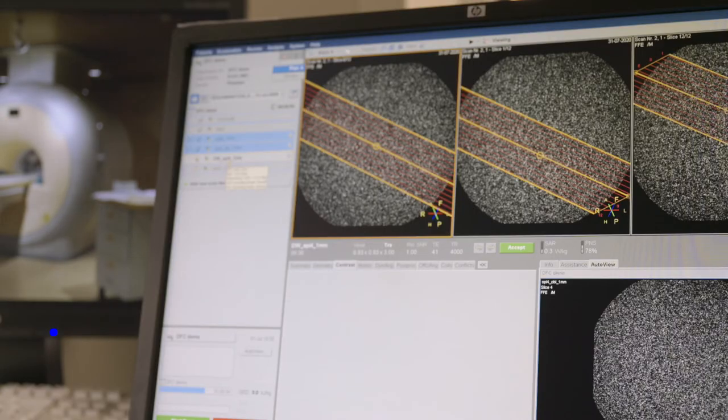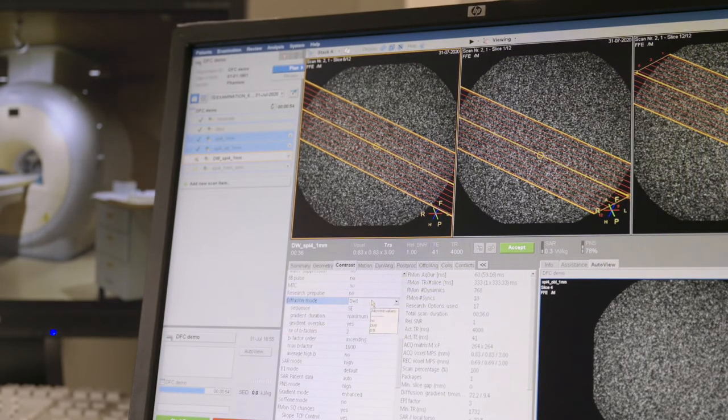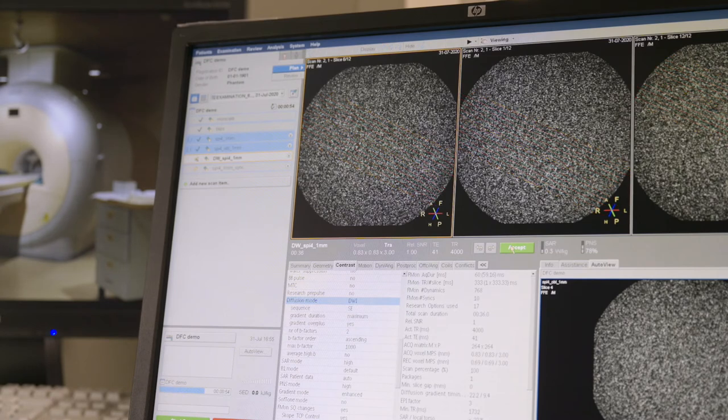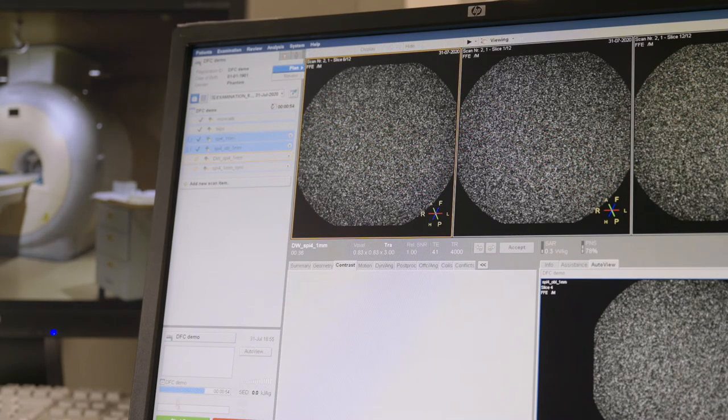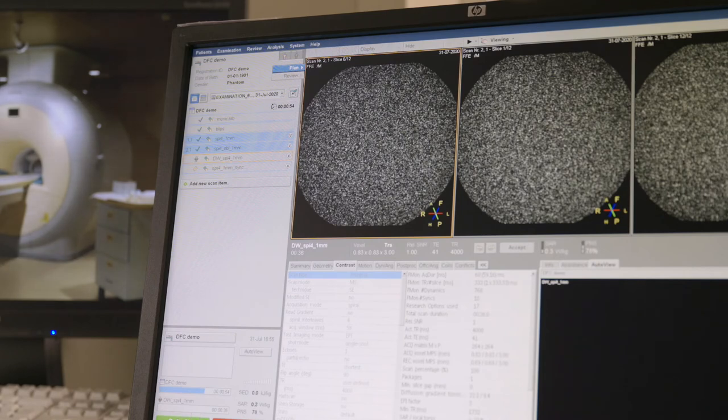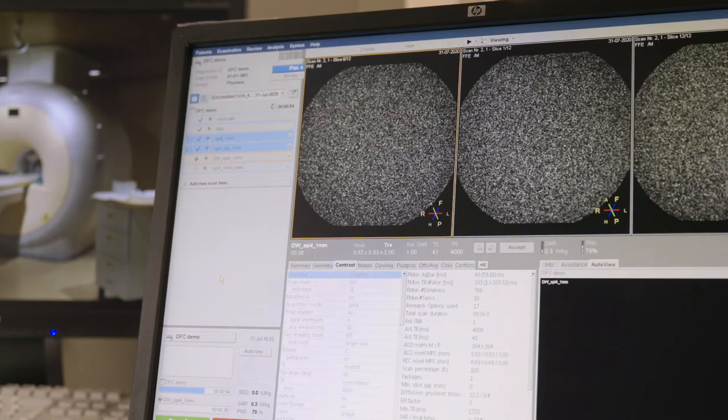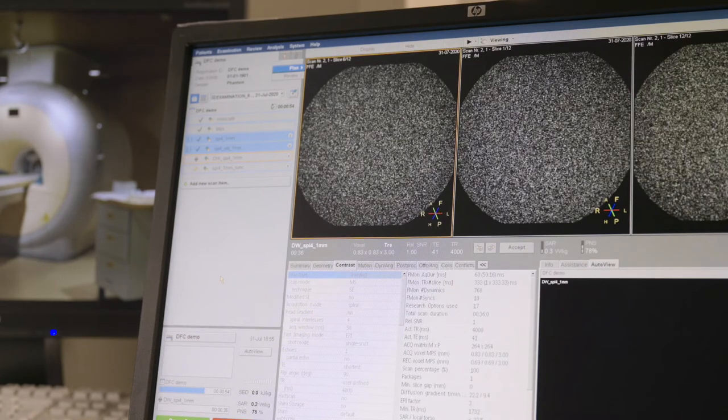Now, let's return to scanning and add a diffusion preparation to our spiral sequence. Spiral diffusion imaging is particularly interesting since diffusion applications are very often limited by low SNR and low spatial resolution. By choosing a spiral readout instead of EPI, we can shorten the echo time and thereby significantly increase image signal.